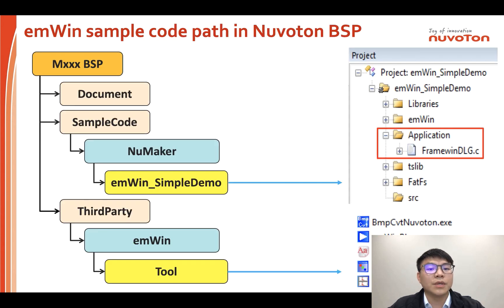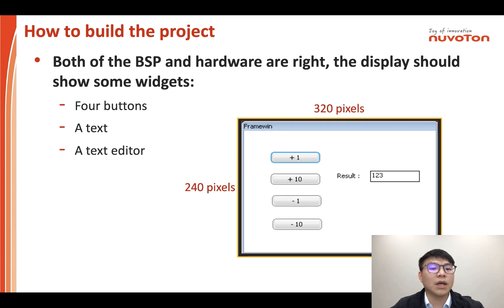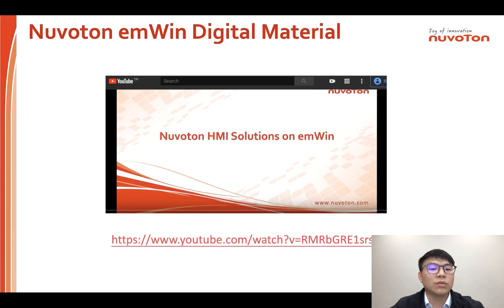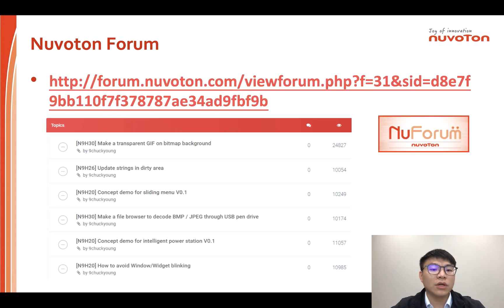If you download the NeuVertone BSP, you will see a folder structure including documents, sample code, and third-party content. You can find many kinds of sample code folders, including a NuMaker folder. You can find the EMWIN sample code in the NuMaker folder, and then use Keil or GCC to open the EMWIN project. If BSP and hardware are correctly set up, the display should show some widgets — four buttons, a text label, and a text editor.